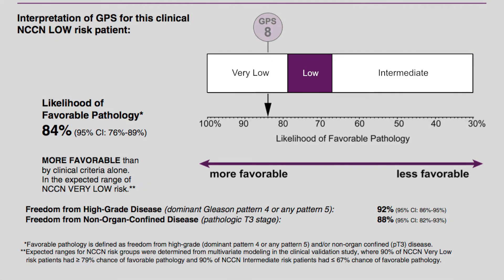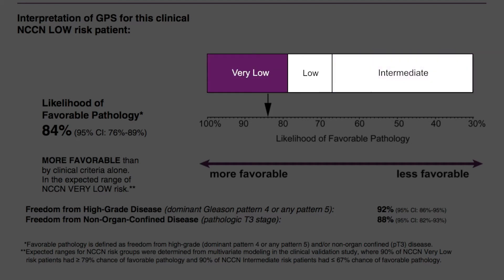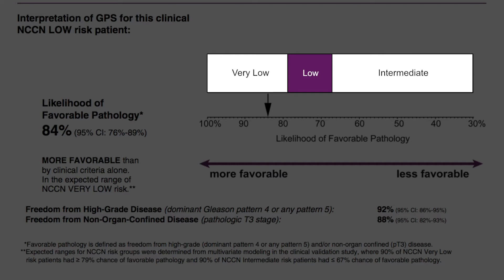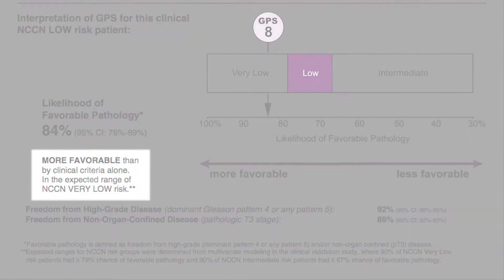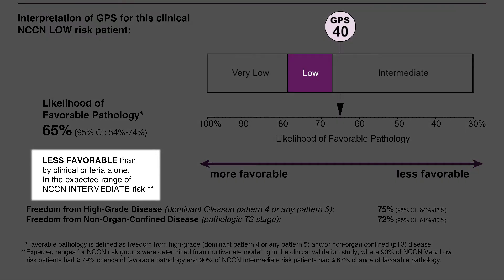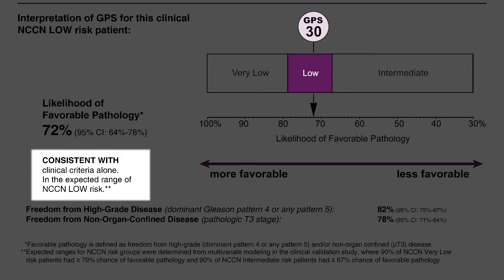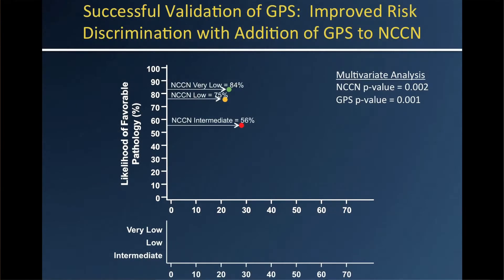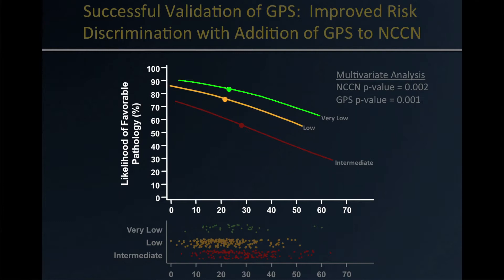When you receive the report, you will notice that there is always one box within the horizontal bar which is shaded in purple. The shaded box corresponds to the NCCN clinical risk group that you indicated on the requisition form when you ordered the test. The GPS result above the risk box will be to the left when the biology is more favorable than predicted by clinical criteria alone, or to the right when it is less favorable than would be predicted by clinical criteria. If the GPS result aligns within the purple box, the patient's biology is consistent with his clinical criteria. The value of GPS goes beyond refining a patient's risk group. With GPS, you are able to precisely predict each patient's risk.